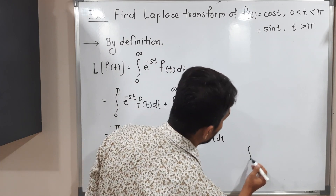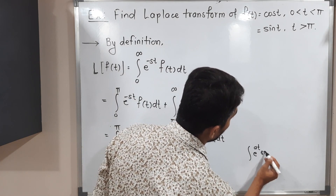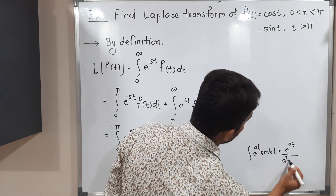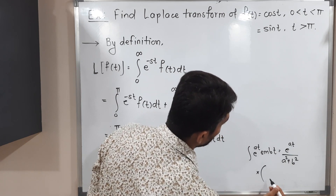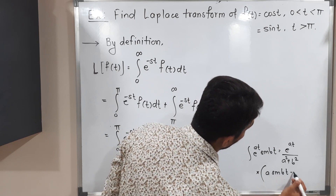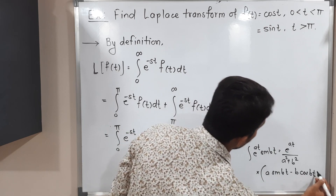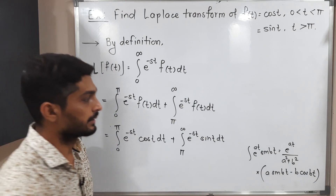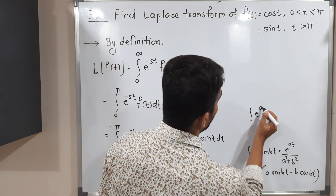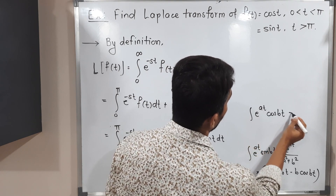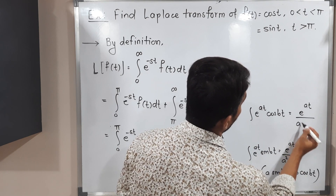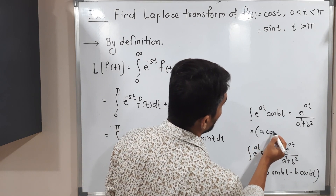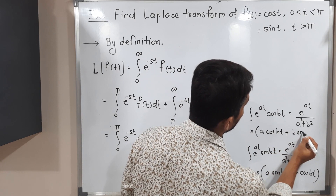The direct formula for the integration of e^(at) sin(bt) is: e^(at) divided by (a² + b²), multiplied by (a sin(bt) minus b cos(bt)). Similarly, the formula for integration of e^(at) cos(bt) is: e^(at) divided by (a² + b²), multiplied by (a cos(bt) plus b sin(bt)).